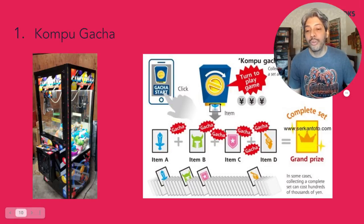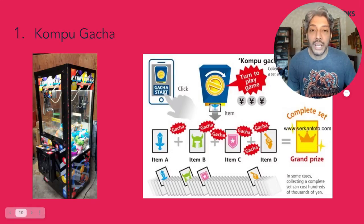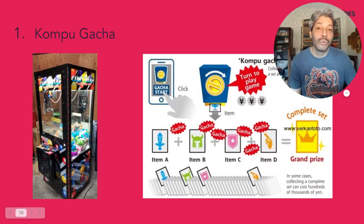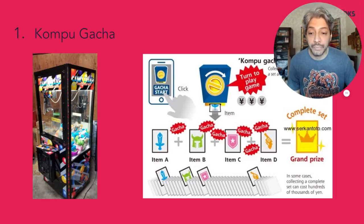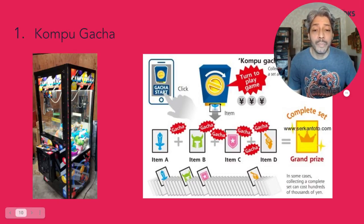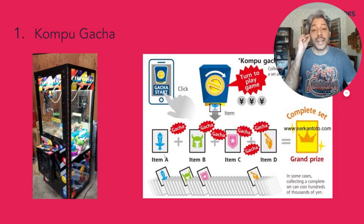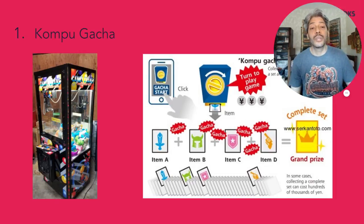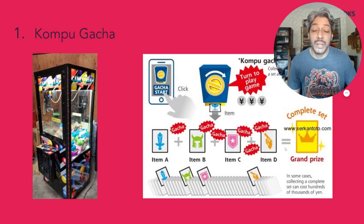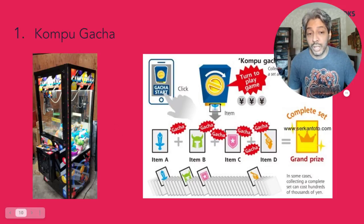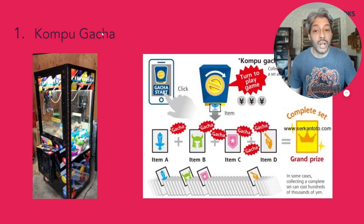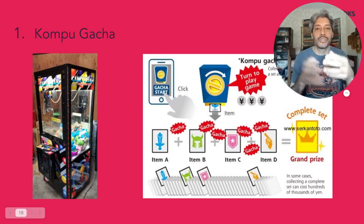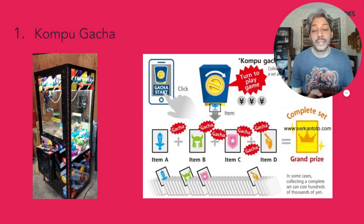With Compu-Gacha, there's only one rare green toy but many common blue ones. If you need items A, B, C, and D to win the grand prize but item D is very rare, you might have to play hundreds of times to complete your set. Gacha itself isn't problematic — it's a good way of giving variable rewards, like a mystery box with probability-based outcomes. But Compu-Gacha is problematic because completing your set could require hundreds of plays.